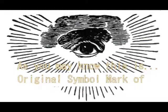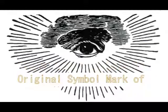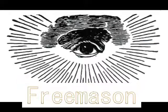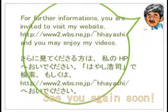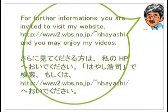Now you know what is this original symbol mark of Freemason. But basically, formally, Freemason was established in 1717 in England, or United Kingdom, or Scotland, I'm not sure. Thank you very much for watching, see you again next time, bye.